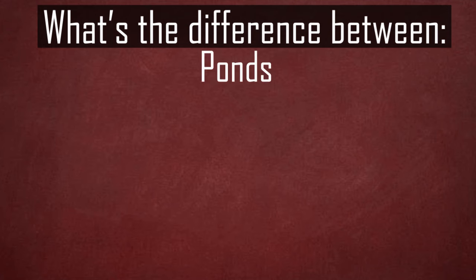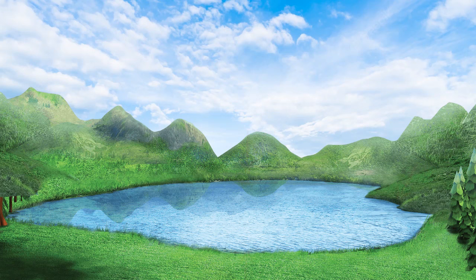What is the difference between ponds, lakes, rivers, seas, and oceans? If a body of water is surrounded by land from all sides, it's either a pond or a lake.